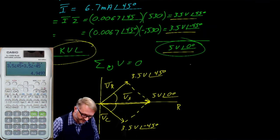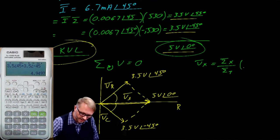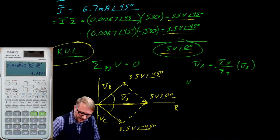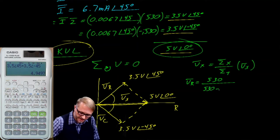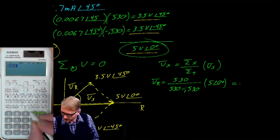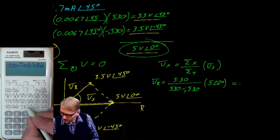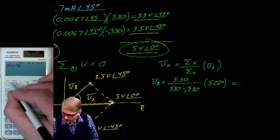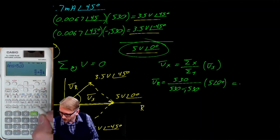We could also have used the voltage divider: V_of_interest = (Z_of_interest / Z_total) × V_source. For the resistor voltage: (530) / (530 − j530) × 5∠0°. Entering into the calculator — 530 divided by (530 − j530), equals, then multiplied by 5 at 0°, shifted to polar form — gives the same answer: 3.5 volts at 45°.